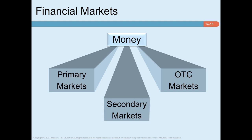On the other hand, the secondary market is the market for existing securities. In the secondary market, securities are traded among investors. One key difference is that the primary market channels funds from the investor to the issuing corporation — if you buy shares from an issuing company, the fund flows from you to that company. However, in a secondary market transaction, funds are merely transferred from one investor to another; it doesn't channel funds to the issuing company.